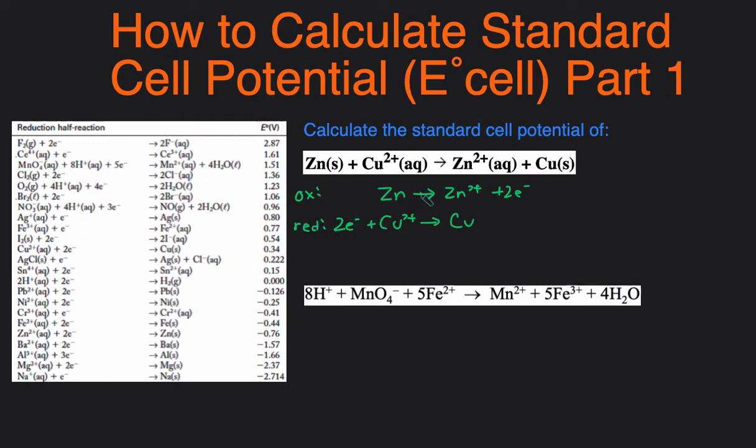Then we determine the potential or the voltage of each of these half-reactions by looking at the table. This table right here are for reduction reactions. So if we want it for oxidation, then we have to take the opposite value, because when you flip the reaction, it turns reduction into oxidation or oxidation into reduction. So let's take a look at what the potential for Zn is.